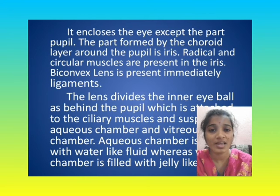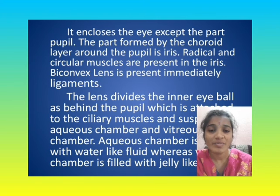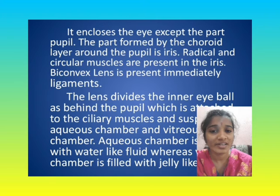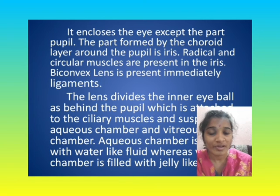The part formed by the choroid layer around the pupil is the iris. Radial and circular muscles are present in the iris. A biconvex lens is present immediately behind the pupil, attached to the ciliary muscles by suspensory ligaments. The aqueous chamber is filled with water-like fluid, whereas the vitreous chamber is filled with jelly-like fluid.